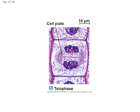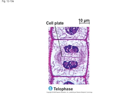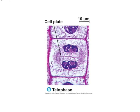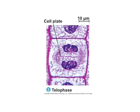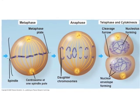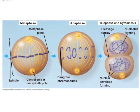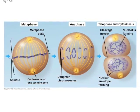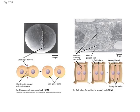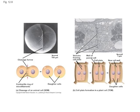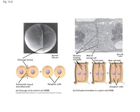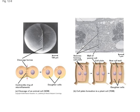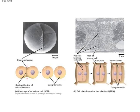In telophase, in each of the two new daughter cells, the chromosomes gather at the poles while the nuclear membrane begins to reappear, and then the chromosomes unwind into chromatin again. The end of telophase marks the end of mitosis and the beginning of cytokinesis, or the division of the cytoplasm.